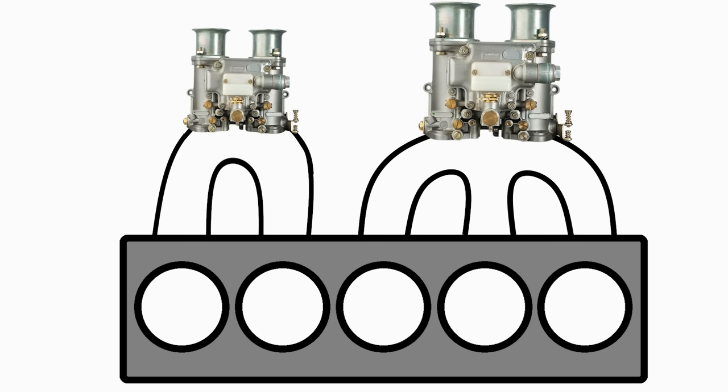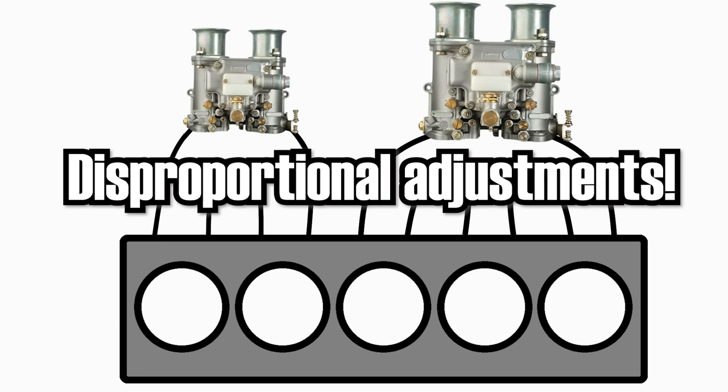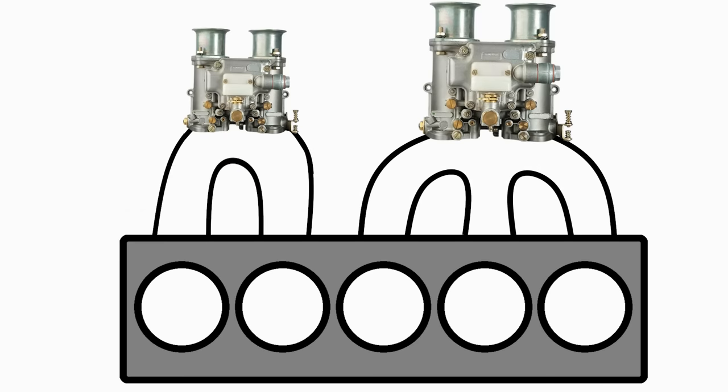And even if you could get it to run right for the particular environment and altitude of the manufacturing facility, tuning this setup in a different climate, different altitude, or as the engine ages, would be nearly impossible because all the adjustments on one carburetor would not be proportional to the adjustments on the other. And you would end up with a tuning nightmare and a scenario where two cylinders perform differently from the other three, again leading to a rough running engine.